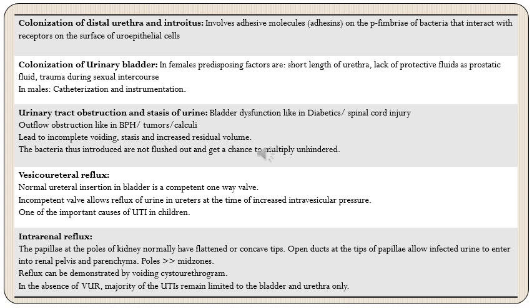The first step for development of UTI is colonization of the distal part of the urinary tract — the distal urethra and introitus in females — by various organisms. This involves adhesion of adhesive molecules on the surface of bacteria with receptors on the surface of uroepithelial cells. With the help of these adhesins, organisms latch onto the uroepithelial cells, completing the first step of colonization of the distal urinary tract.